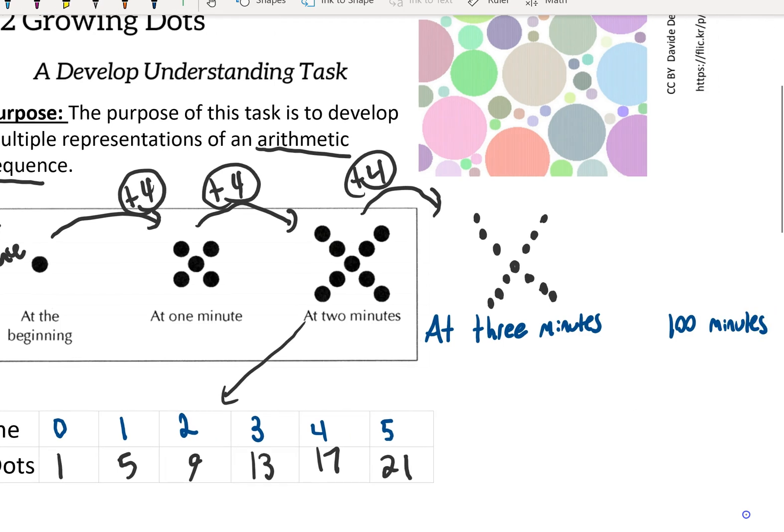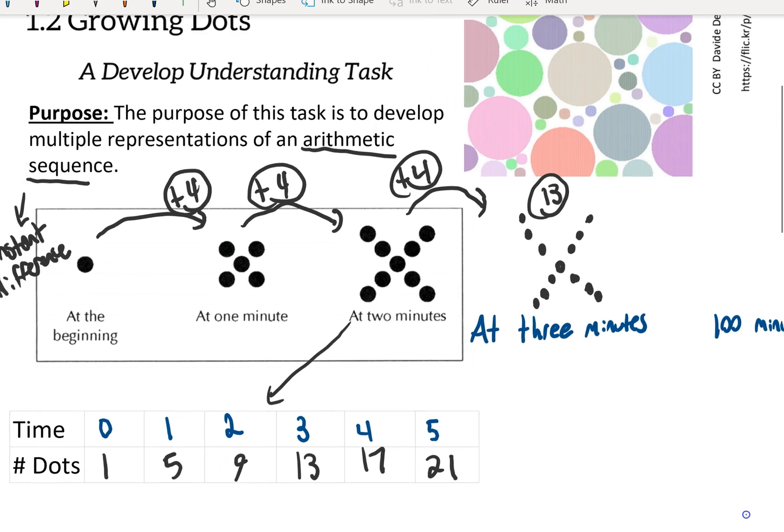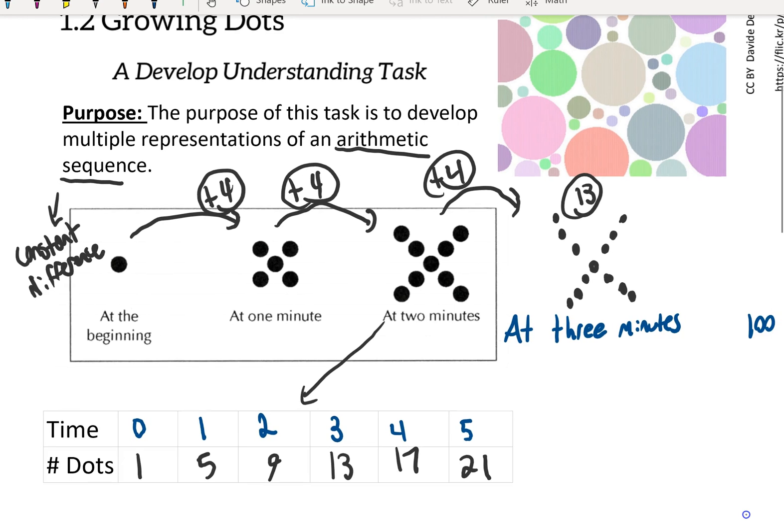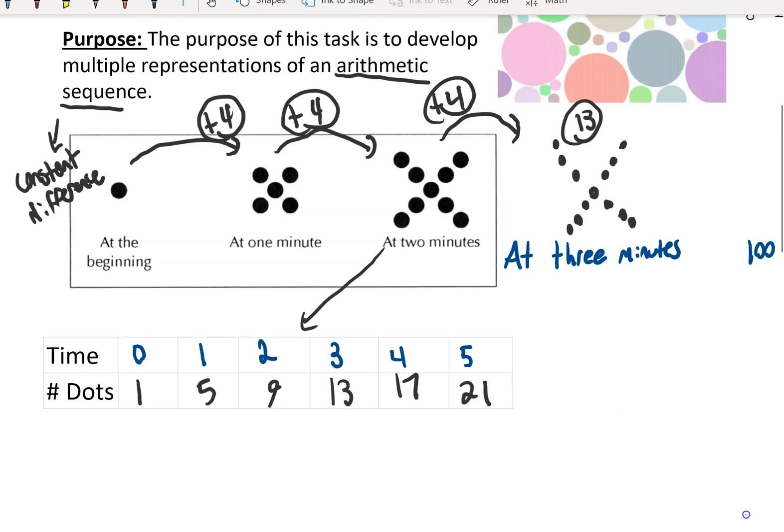To answer this next question, at three minutes, that was 13 dots was the answer to the question. To answer this question of 100 minutes, that is a little bit harder because I don't really feel like adding four 95 more times. You might, and you could, but I wonder if there's a more efficient strategy.